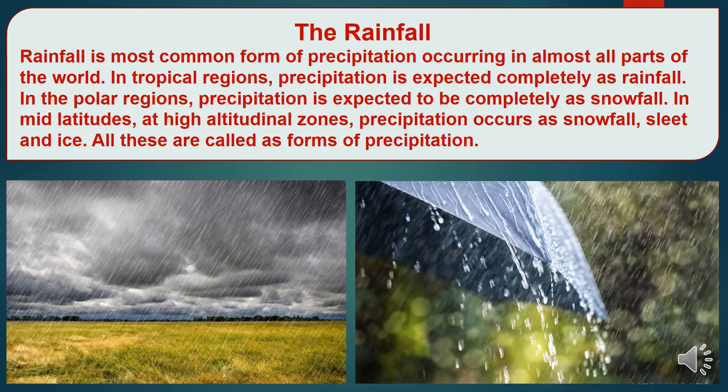The next component is rainfall. Rainfall is the most common form of precipitation, occurring in almost all parts of the world. In tropical regions, precipitation is expected completely as rainfall. In the polar regions, precipitation is expected to be completely as snowfall. In mid-latitudes and at high altitudinal zones, precipitation occurs as snowfall, sleet, and ice. All these are called forms of precipitation.